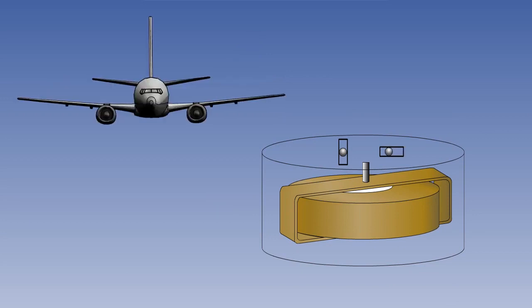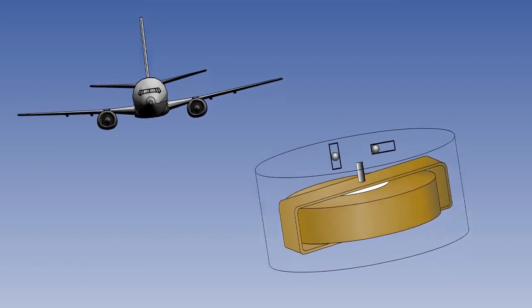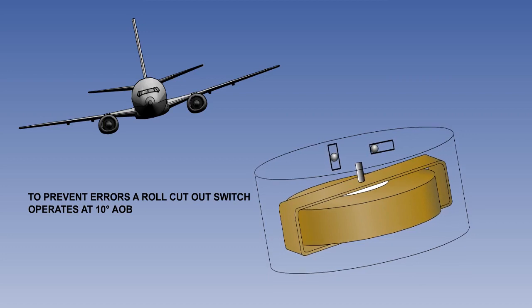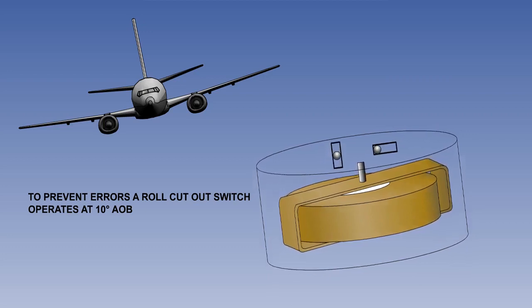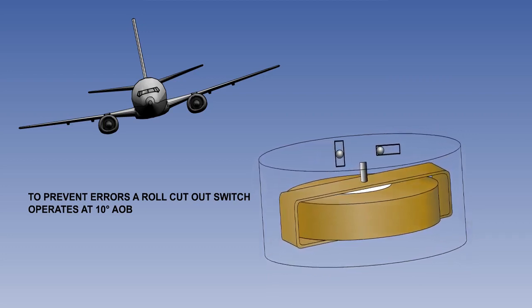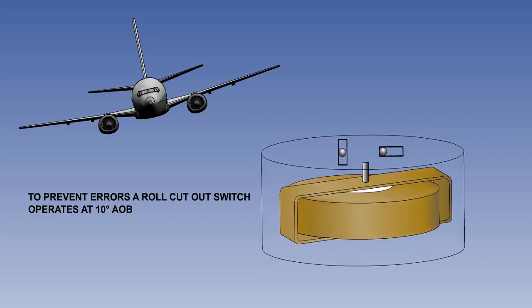Similarly, in a turn, the mercury in the mercury roll sensing switch would falsely activate the roll torque motor. A secondary roll cutout switch is therefore incorporated in the circuit, which is activated at 10 degrees angle of bank.